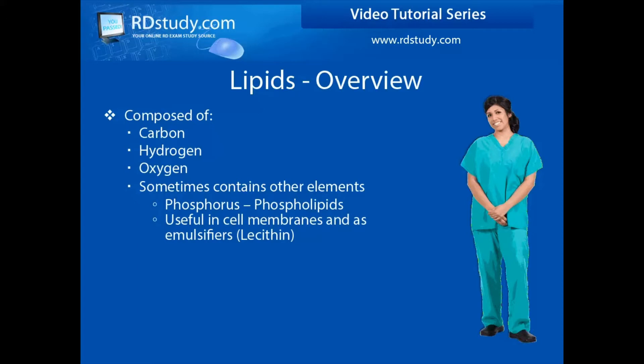As a brief example, phospholipids are found within cell membranes and are also very useful in foods as they can be used as an emulsifier. Lecithin is one example.